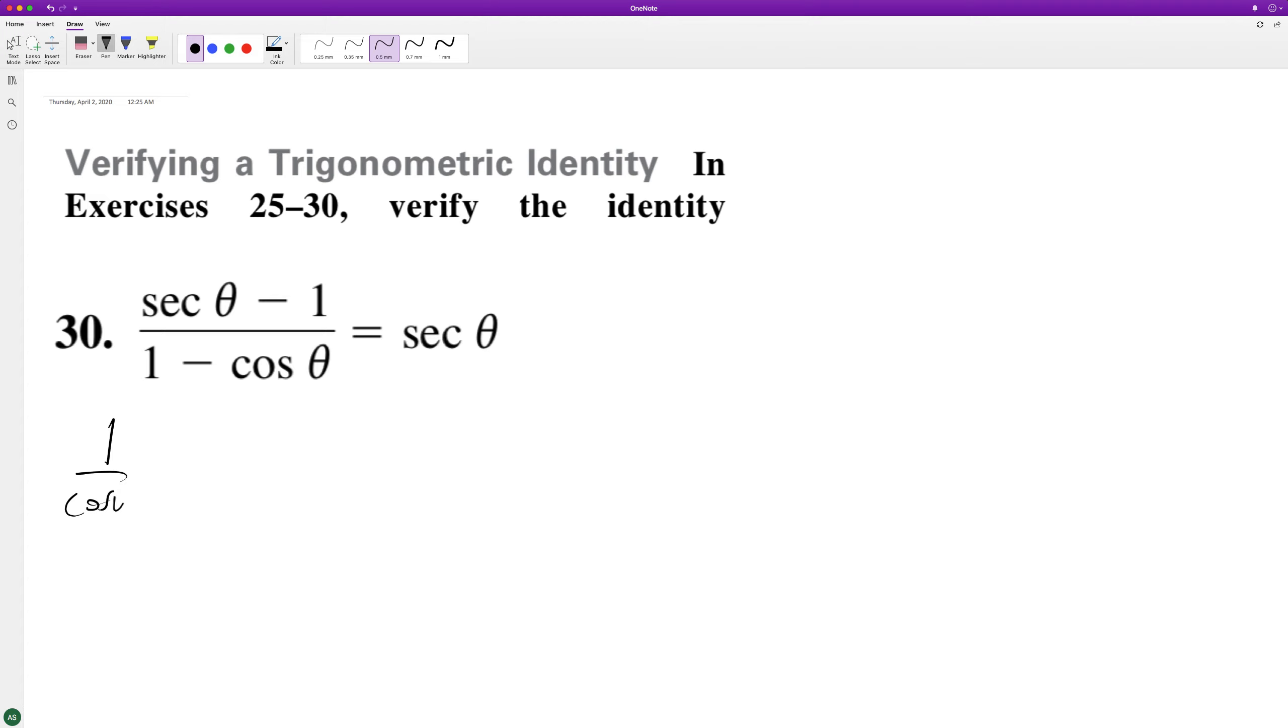So it's going to be 1 over cosine theta minus 1. And then 1 minus cosine theta times 1 plus cosine theta becomes 1 minus cosine squared theta.